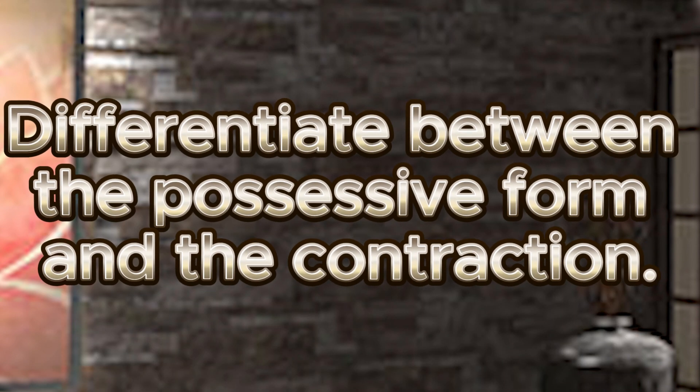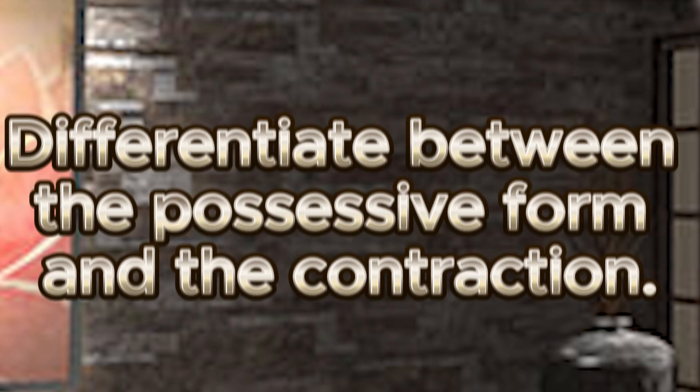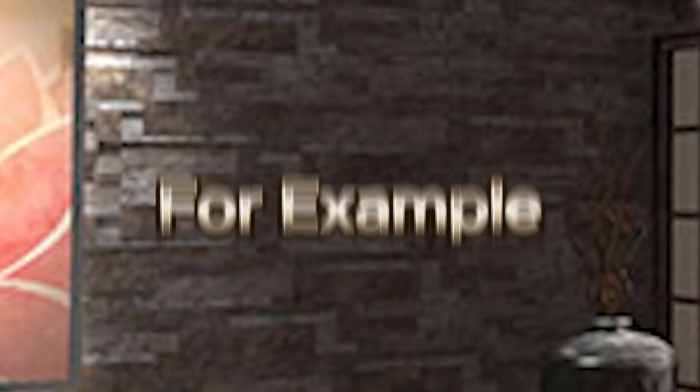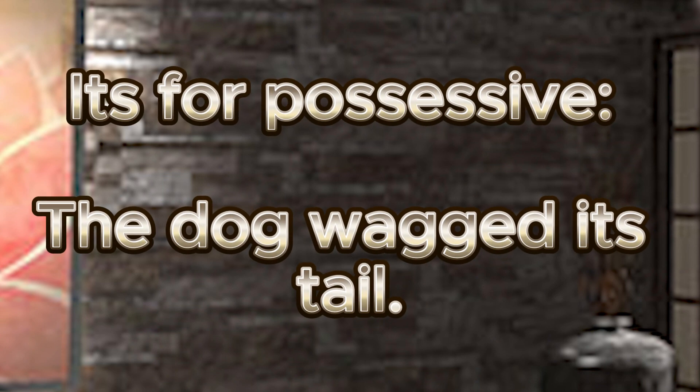Differentiate between the possessive form and the contraction. For example, "its" for possessive: "The dog wagged its tail."